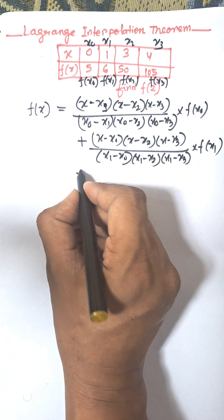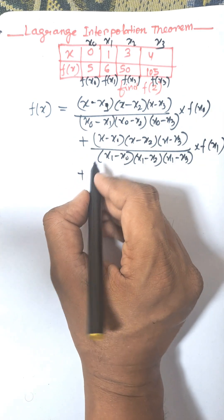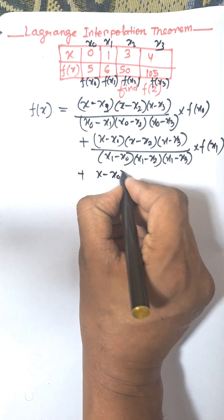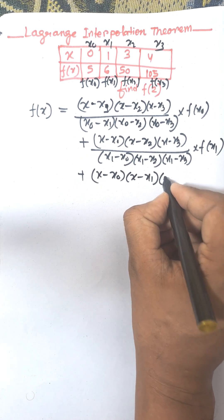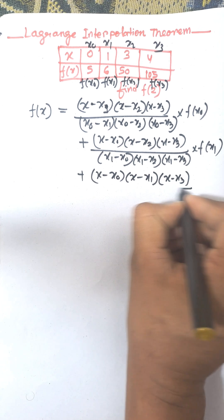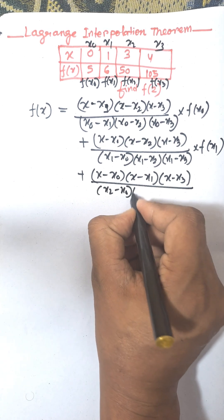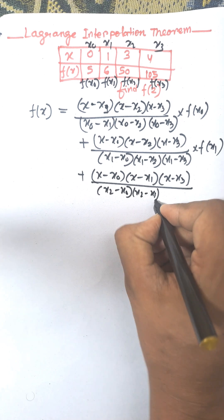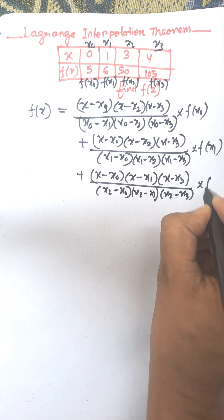The next formula is when you remove x2: that will be x minus x0, x minus x1, x minus x3, divided by x2 minus x0, x2 minus x1, x2 minus x3, into f(x2).